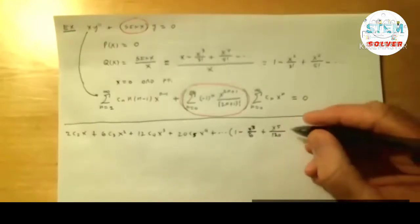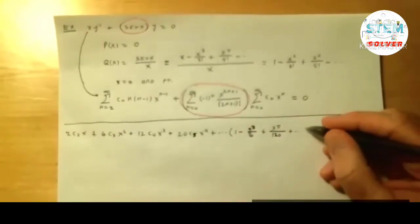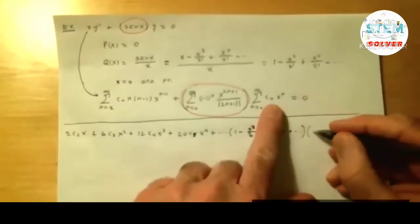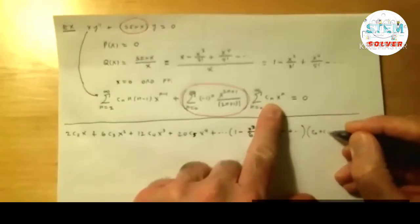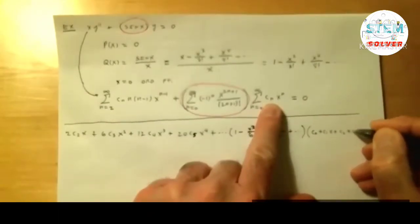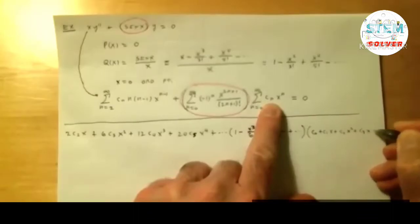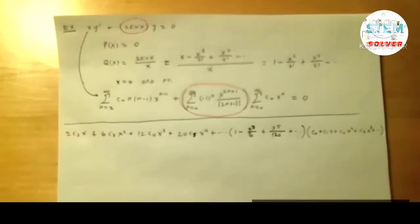Now this, I'm going to write out. C naught plus C1x plus C2x squared plus C3x cubed plus dot dot dot. I've actually written out more than I need. So I kind of want you to see what's going to happen here. So let's go back here. I'm going to leave this the way it is.